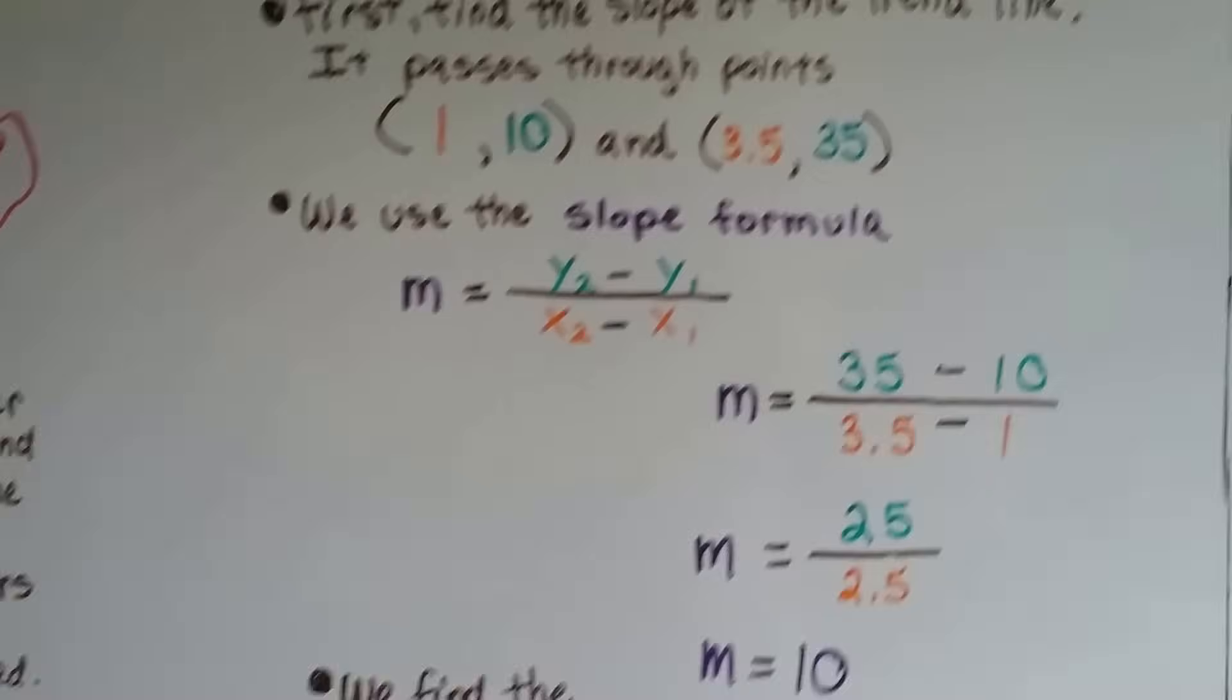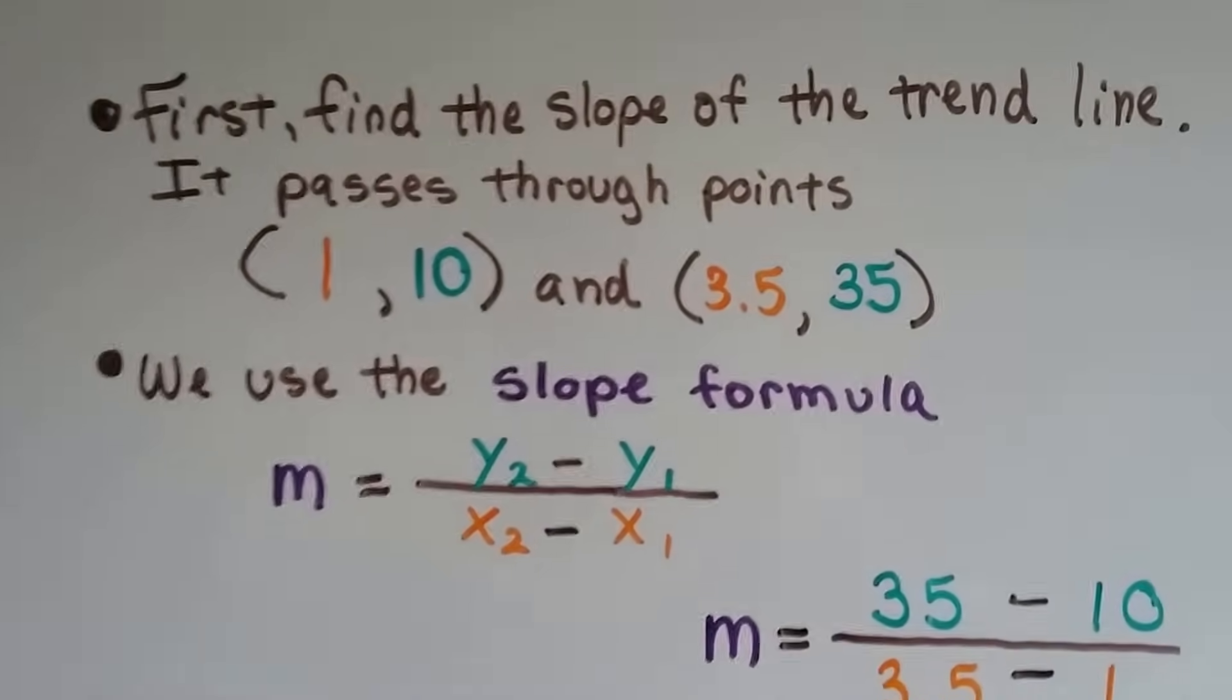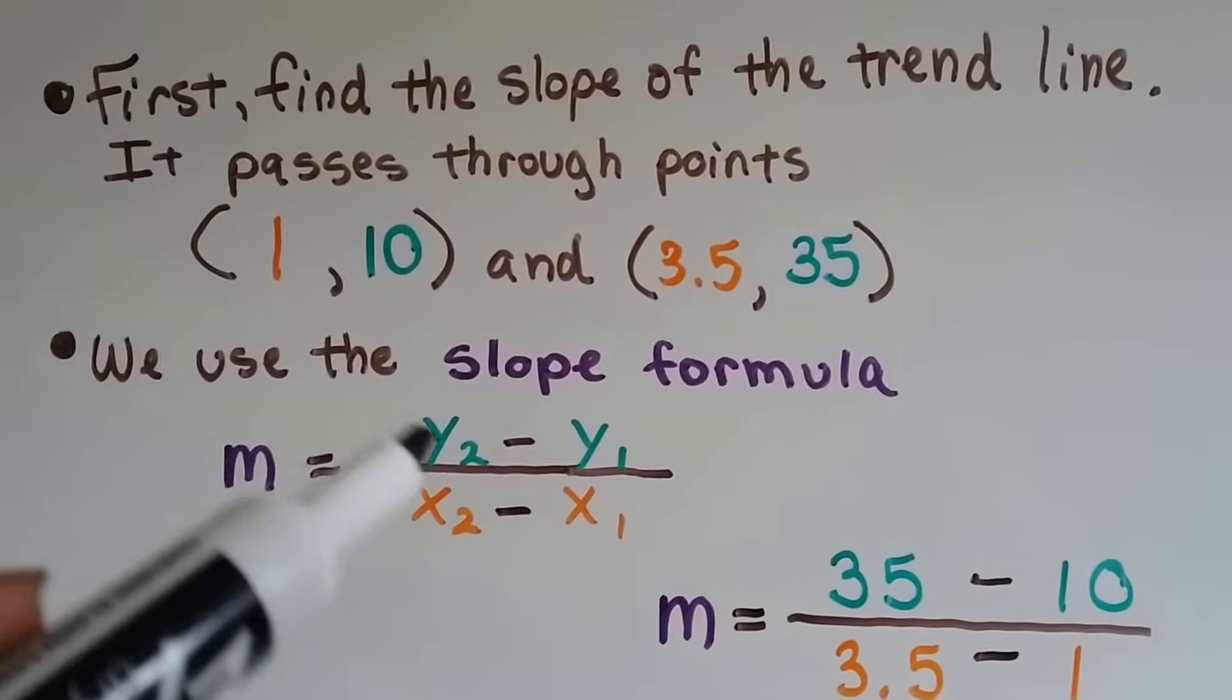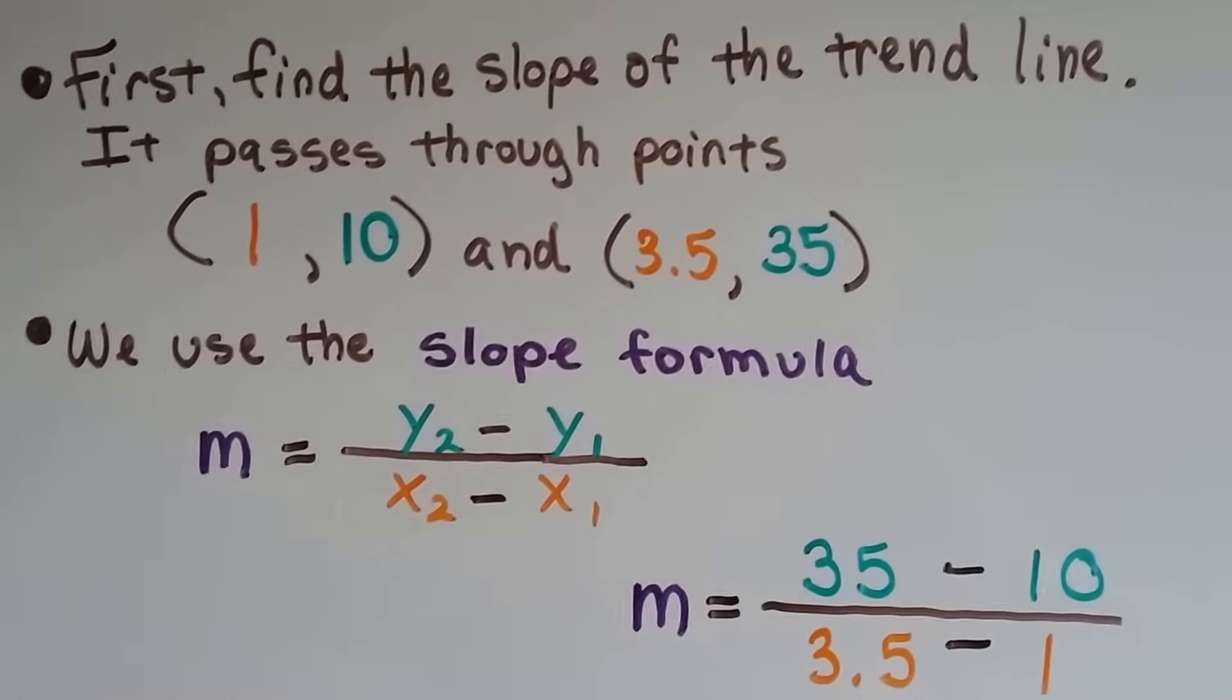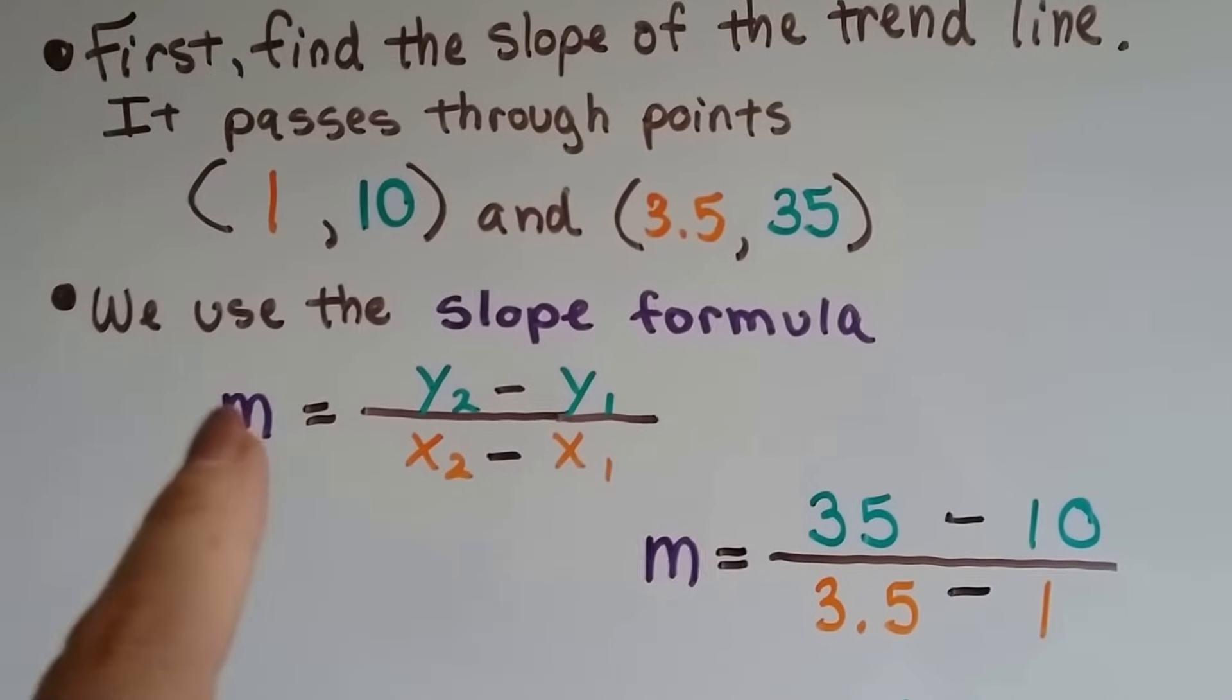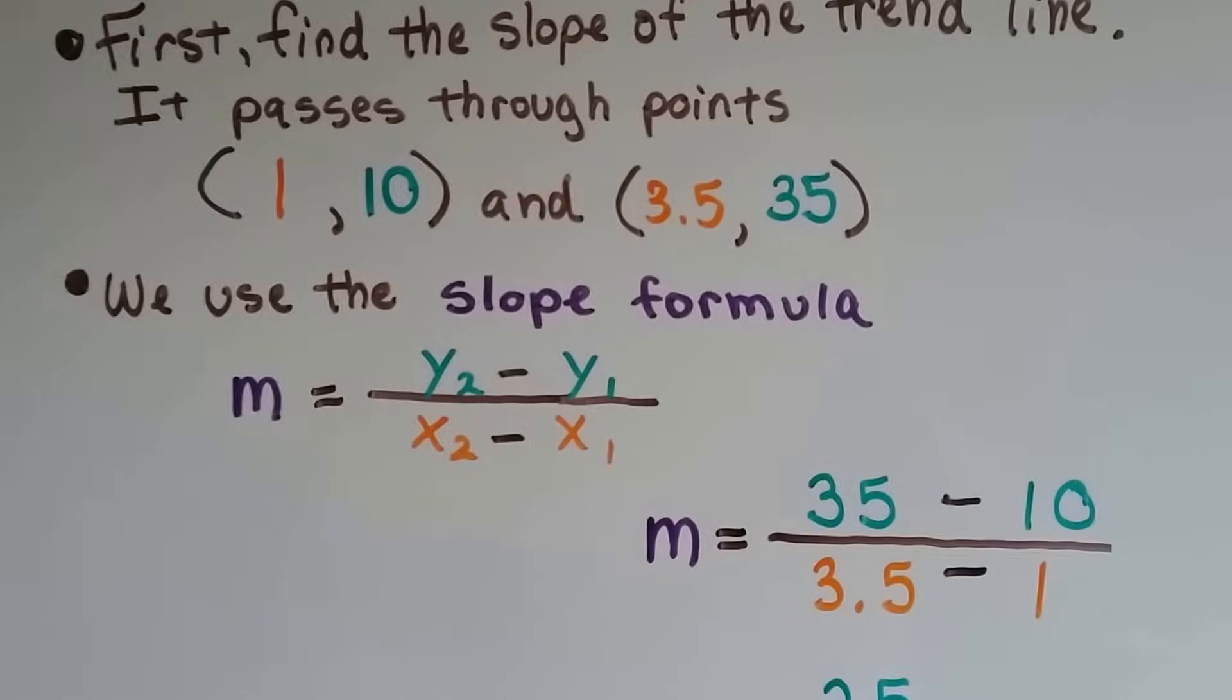So now, we're going to use the slope formula. Do you remember the slope formula from earlier in the year? m equals y2 minus y1 over x2 minus x1. Do you remember that? If not, there's going to be a link for this video in the description.